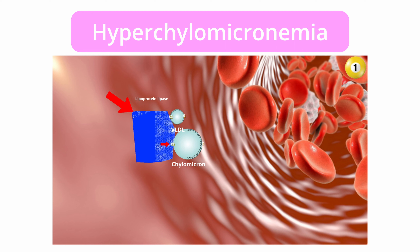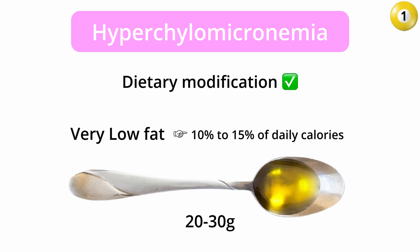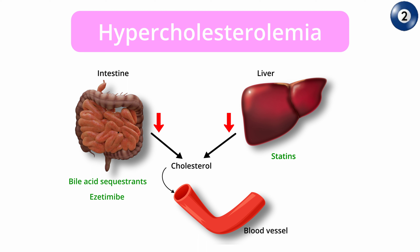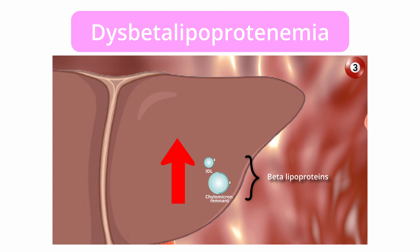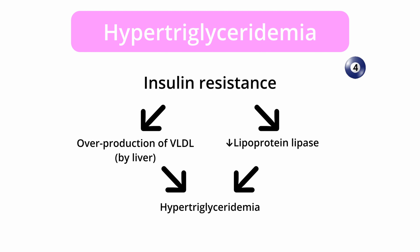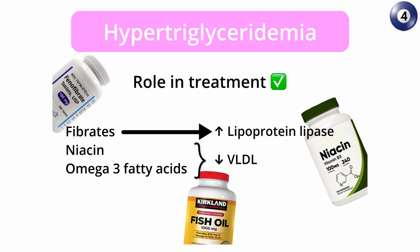Summary: Type 1 hyperchylomicronemia involves impaired breakdown of chylomicrons due to lipoprotein lipase deficiency, managed mainly through dietary modification to prevent pancreatitis. Type 2 familial hypercholesterolemia involves defective clearance of LDL cholesterol, often due to dysfunctional LDL receptors, treated with statins and other cholesterol-lowering medications. Type 3 dysbetalipoproteinemia involves defects in ApoE leading to elevated levels of both cholesterol and triglycerides, requiring a combination of statins and fibrates. Type 4 familial hypertriglyceridemia involves increased VLDL production and decreased lipoprotein lipase activity resulting in elevated triglycerides, treated with fibrates, niacin, and fish oil.